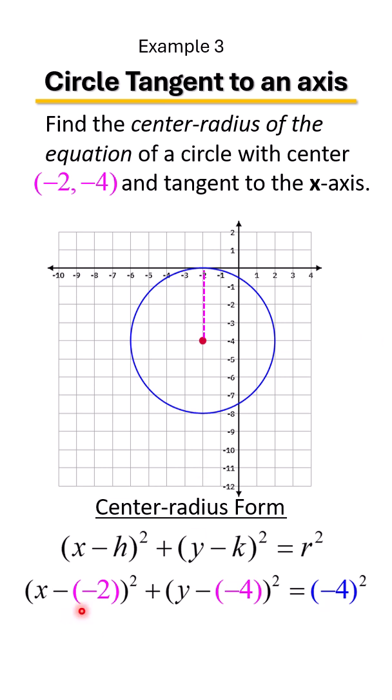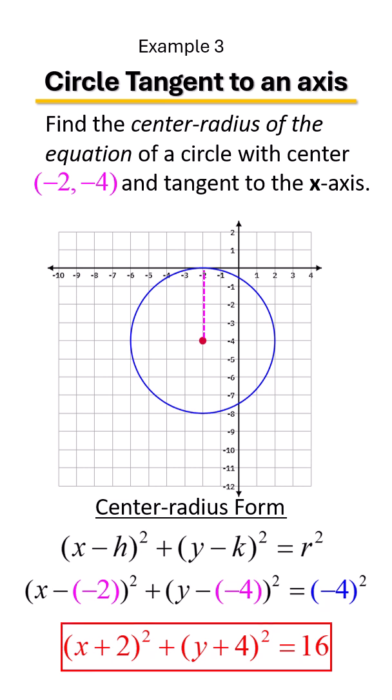Remember, double negatives become positive. So that's going to be (x + 2)² + (y + 4)² equals, and then (-4)² is 16. And you have your equation of a circle that's tangent to the x-axis.